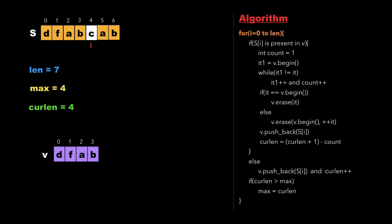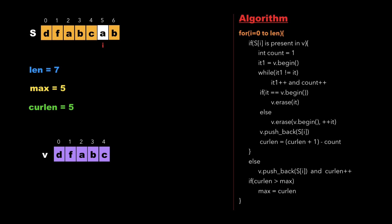Now i points to 'c'. 'c' is also not present so we push 'c' into the vector, increment current_length, and update max. Now i points to the character 'a', which is already present in the vector at location 2. There is an iterator 'it' which points to the position of that character in the vector. We declare a variable 'count' and initialize it to 1, and also create another iterator 'it1' pointing to the beginning of the vector.